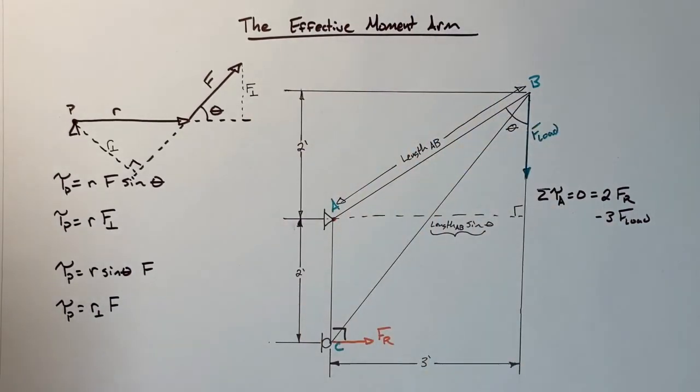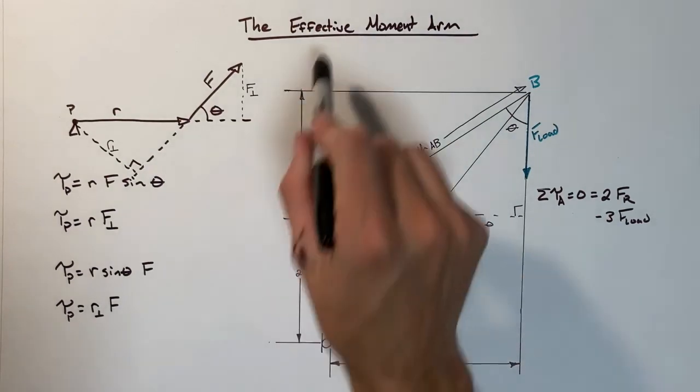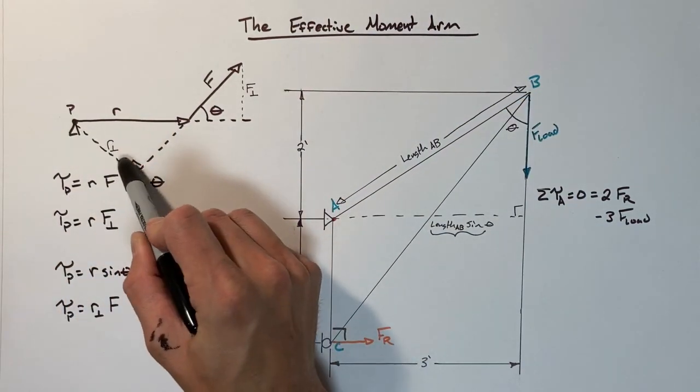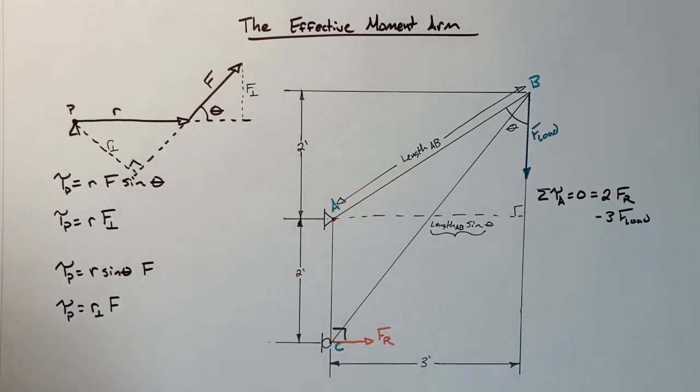This method of not going through and solving for the radius and not having to solve for the angle is what we call using the effective moment arm. The effective moment arm specifically being the length of the radius vector perpendicular to the force. This can save you a bunch of time on trusses. And that's all for now.